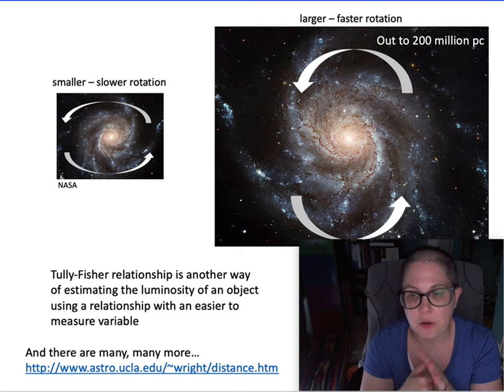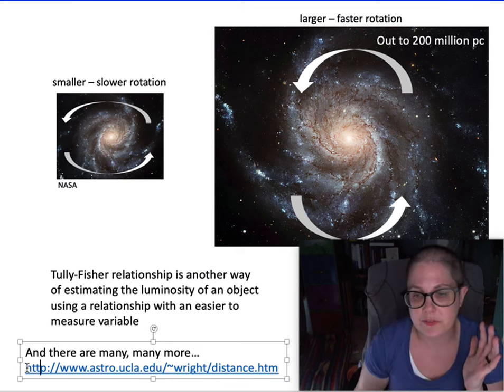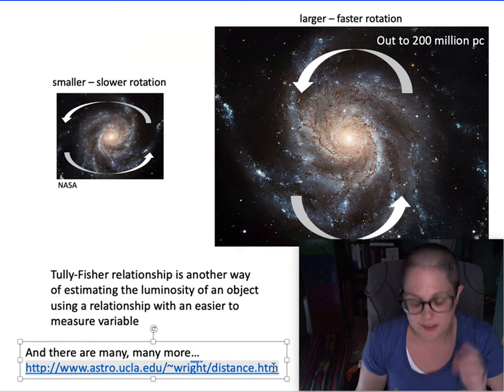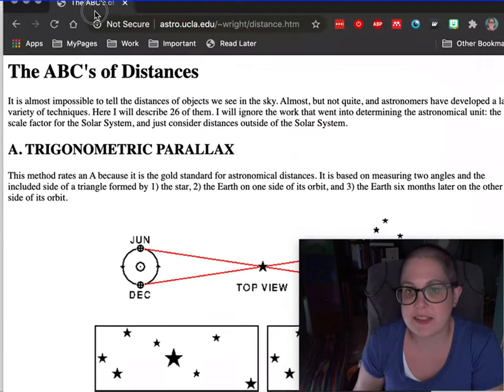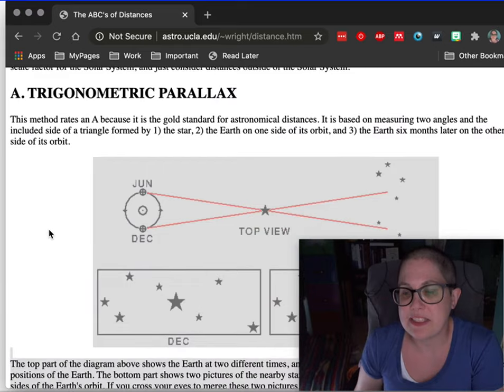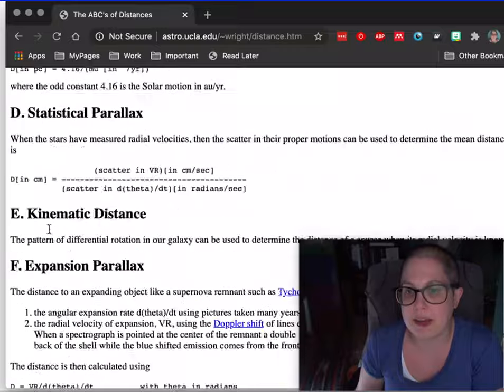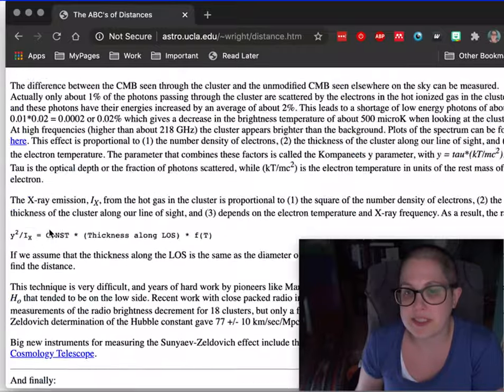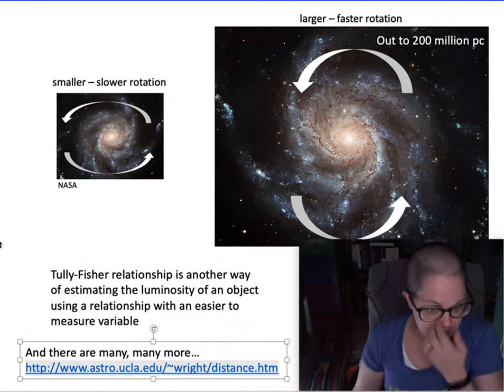There's a whole website. I will put, I always used to visit this one in grad school. It's an A through Z listing of different types of distance measurements from Ned Wright at UCLA. Oh, I can't make that smaller, can I? Yeah. So ABCs of distances, it goes through, you know, a whole bunch from nearby to most distant, each letter of the alphabet has its own distance measure.